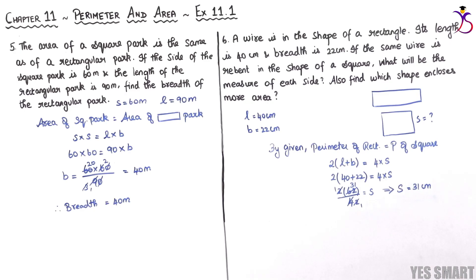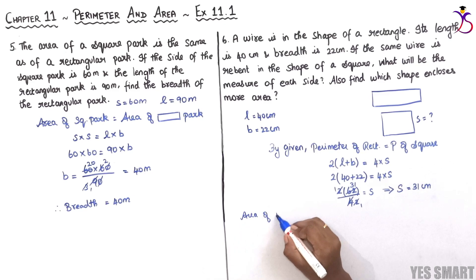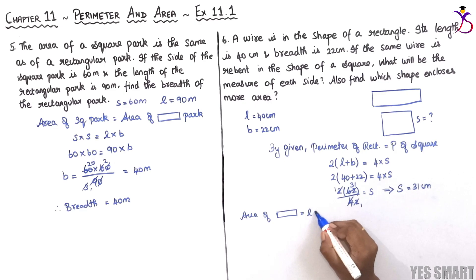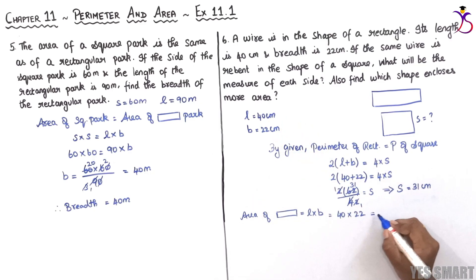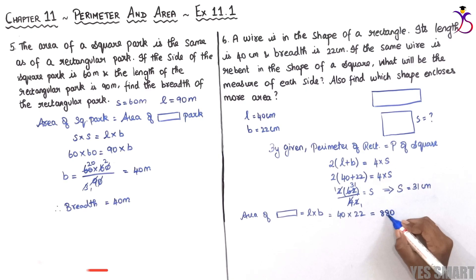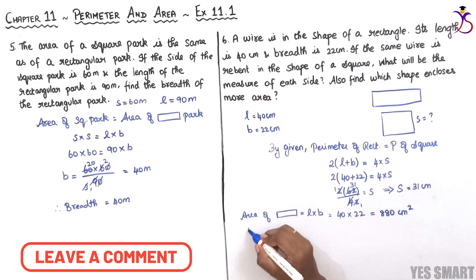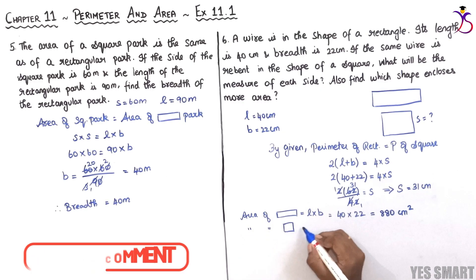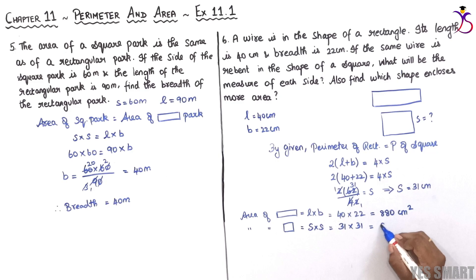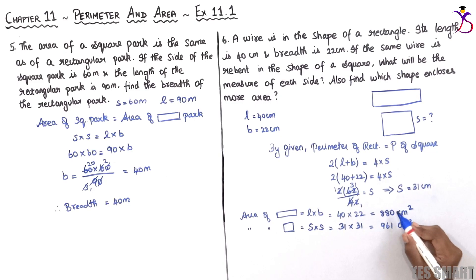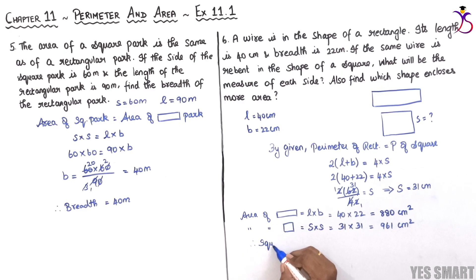Area of rectangle equals L into B, which is 40 into 22, equal to 880 centimeter square. Area of square equals side into side, which is 31 into 31, equal to 961 centimeter square. Since 961 is greater than 880, the square-shaped wire encloses more area.